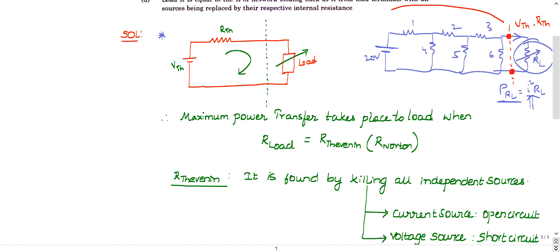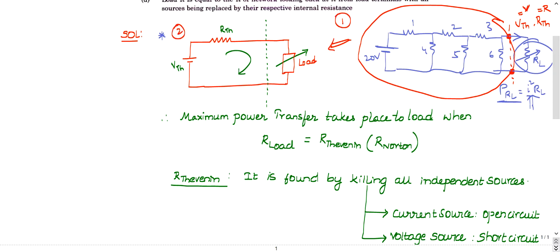From those terminals you calculate VTH — some voltage value — and RTH — some resistance value. You then redraw the network as Figure 2: the Thevenin voltage VTH replaces the entire source, and RTH replaces the effect of all those resistances, as seen from the load terminal.